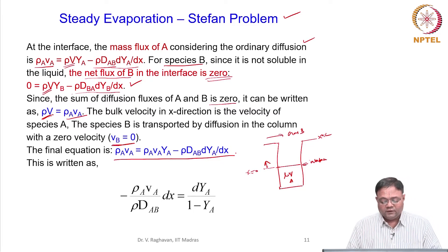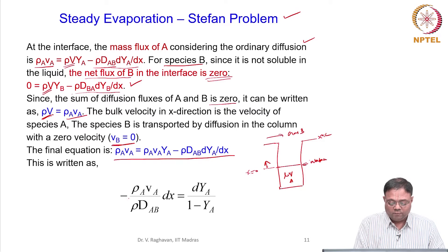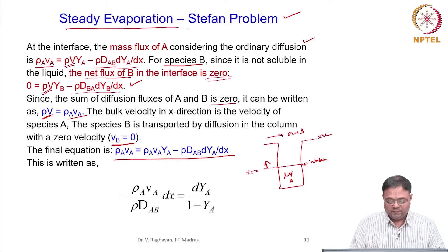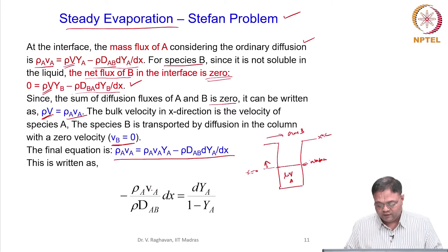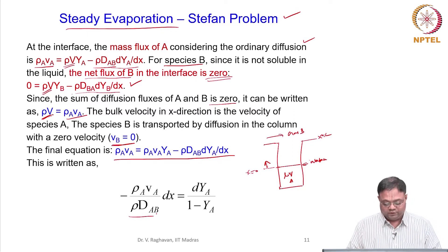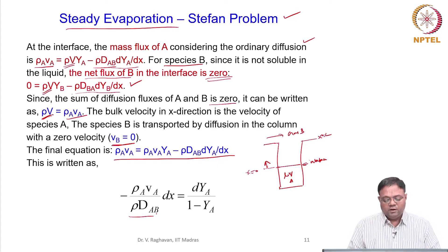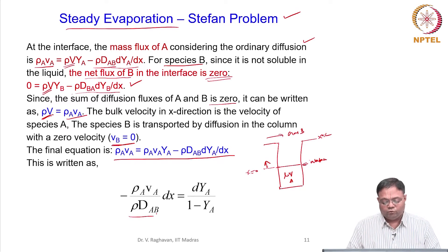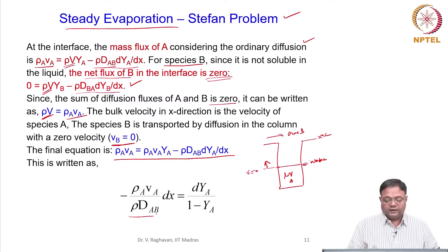We will separate variables and integrate. For steady evaporation, rho_A * V_A is the steady state flux and is therefore constant. Similarly, properties are taken as constant, so rho * D_AB is constant. Separating: minus (rho_A * V_A)/(rho * D_AB) * dx equals dY_A/(1 − Y_A), and we are going to integrate this.